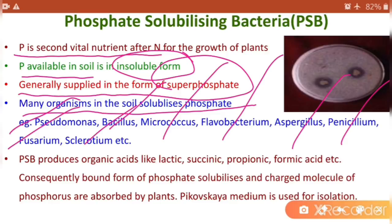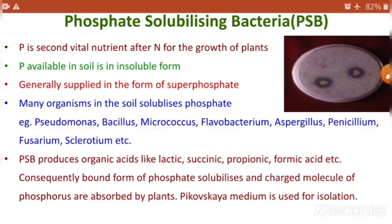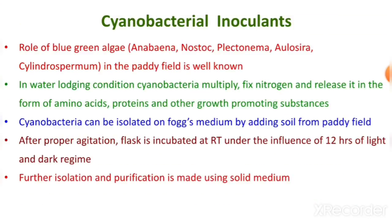Phosphate solubilizing bacteria produce organic acids like lactic acid, succinic acid, propionic acid, and formic acid. Consequently, bound forms of phosphate are solubilized and charged molecules of phosphorus are absorbed by plants. Pikovskaya's medium is used for the isolation of PSBs.